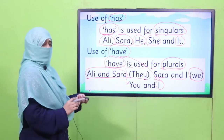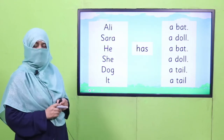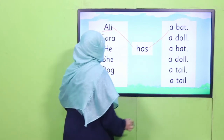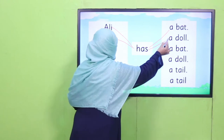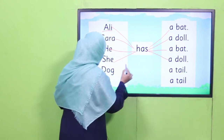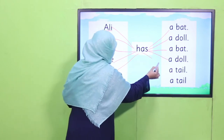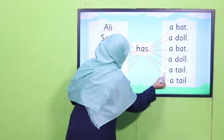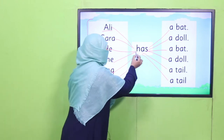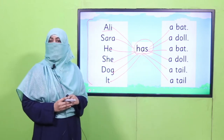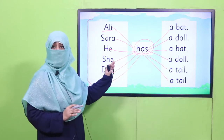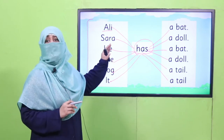With you, we always use have. And I is the only singular substitution word with which we use have. I have made a table so that you can learn it. Ali has a bat. Sara has a doll. He has a bat. She has a doll. Dog has a tail. It has a tail. These are the singular naming words and we use has to show possession.